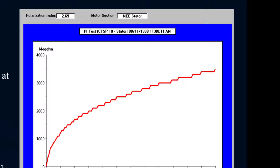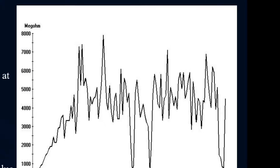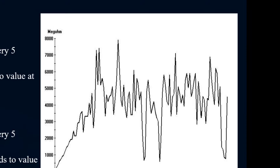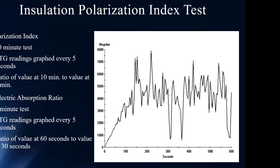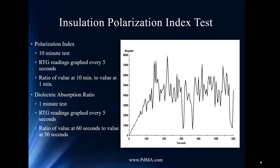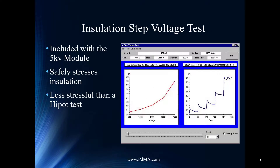The PI number is calculated by dividing the 10-minute reading by the 1-minute reading. What makes PDMA unique is that we show the full profile. For example, you might see a 10-minute value around 4,500 megaohms and a 60-second value around 1,500 — technically over 2 by IEEE standards — but the profile itself is erratic, indicating contamination, moisture, or some other issue discharging throughout the test. Even if the number falls within the recommended range, the profile would flag this for investigation.